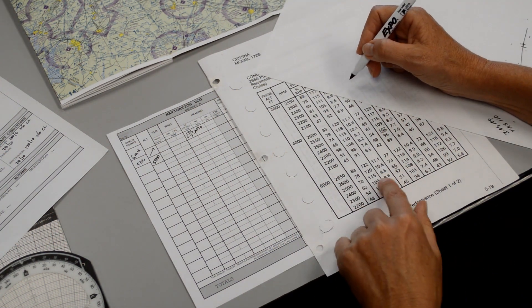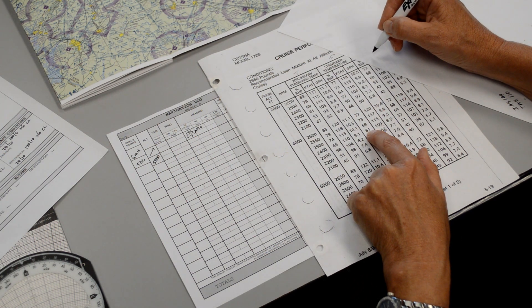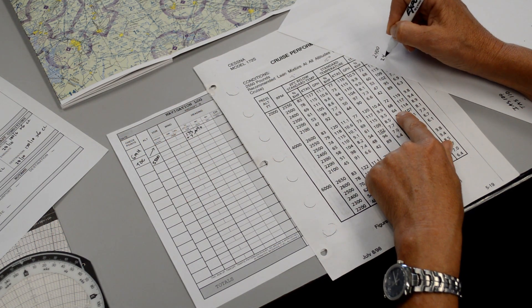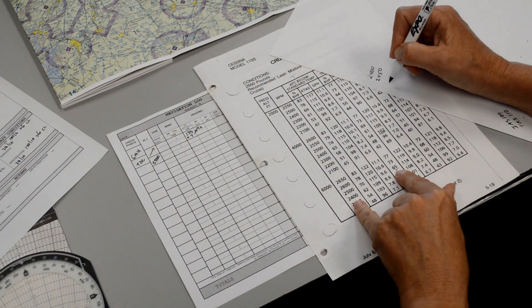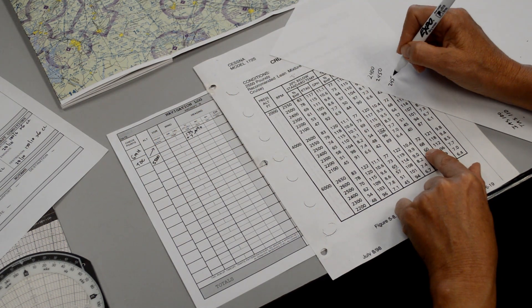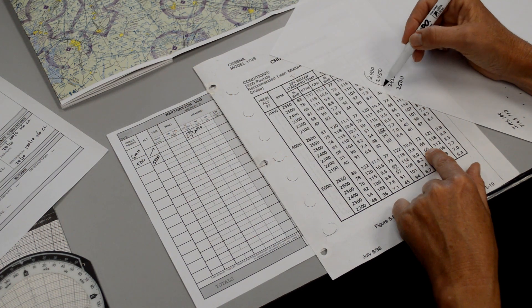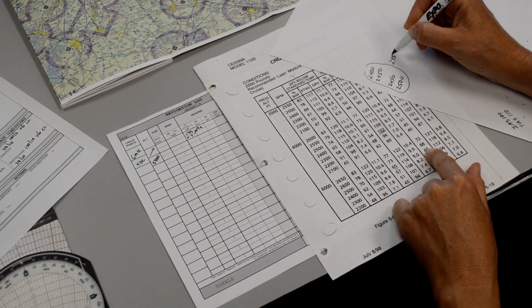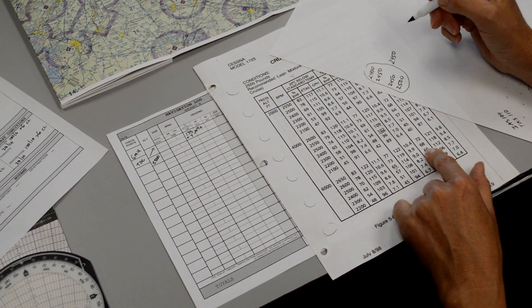Now if we wanted to write all these down and interpolate we certainly could. So our numbers that we're working with are going to be we have 2400 RPMs, here it looks like 2450, down here to get 60% power it looks like 2450 and then 2500 RPMs. So if we look at all this, it looks like 2450 would be the RPM setting selected for this particular flight.